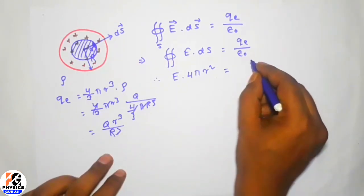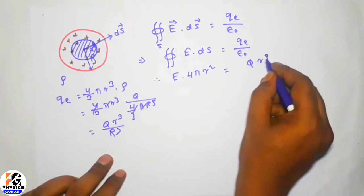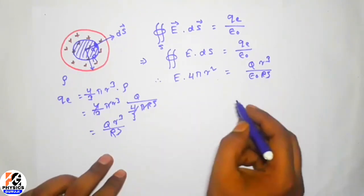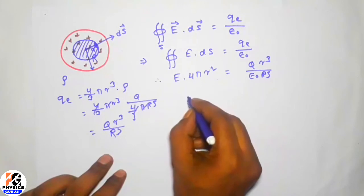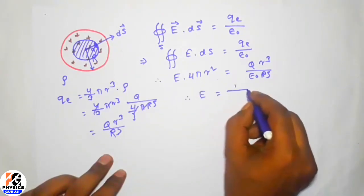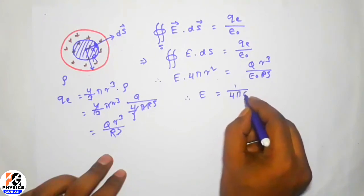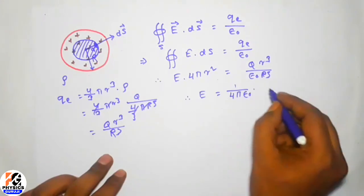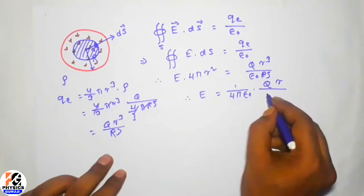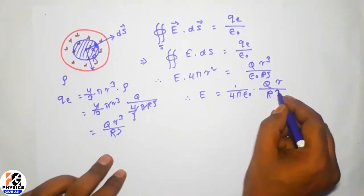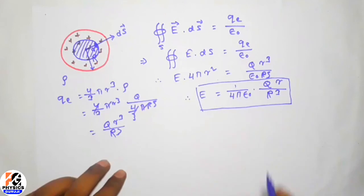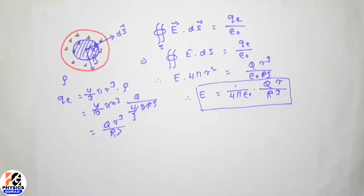We can now substitute Q enclosed back into the equation. We get E times 4π r² equals Q times r³ over epsilon-zero times R³. Therefore the electric field inside the sphere is E equals 1 over 4π epsilon-zero times Q times r over R³.